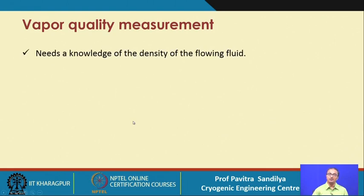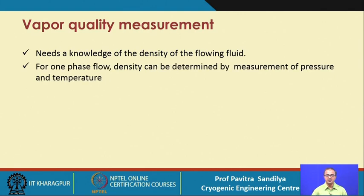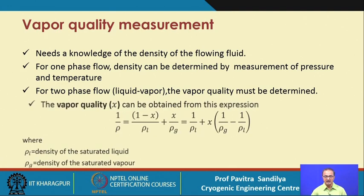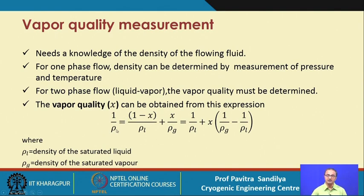Vapor quality is determined using the density of the flowing fluid. For single phase flow, density can be calculated from pressure and temperature using an equation of state. For two-phase flow, density is found by knowing the quality, using the expression: density of two-phase mixture correlated with quality x, where x is the vapor fraction (amount of vapor per unit mixture) and (1−x) is the liquid fraction — combining liquid density and vapor density accordingly.